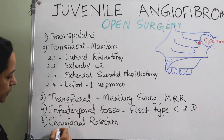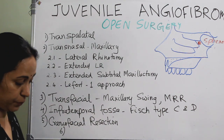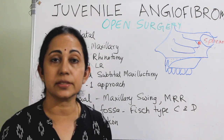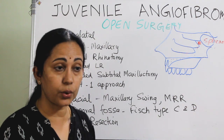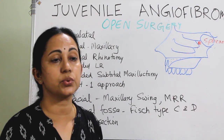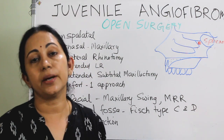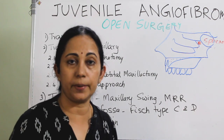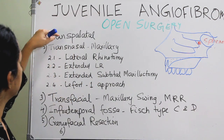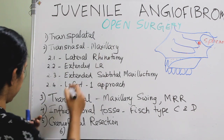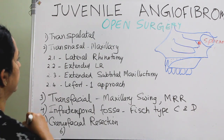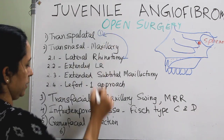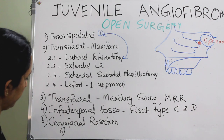In some cases we have to go for combined approaches, depending upon the extent of the tumor, vital structures involved, and the surgeon's expertise. Combined approaches use more than one surgical approach. One commonly used combined approach is transpalatal plus lateral rhinotomy.